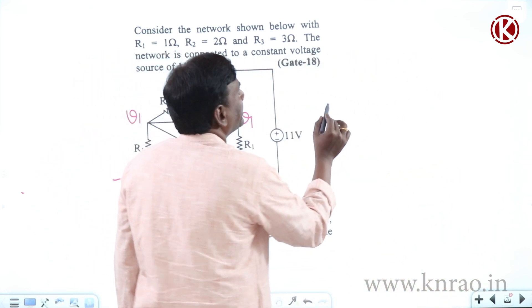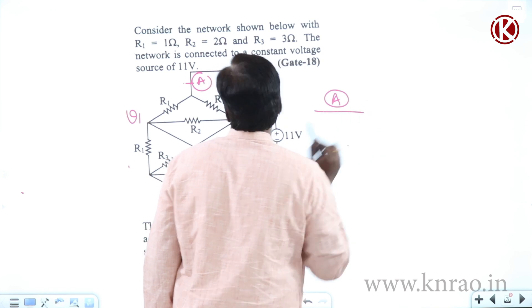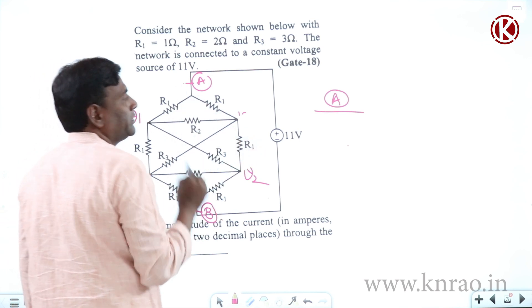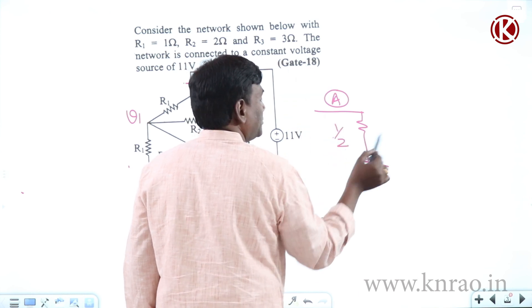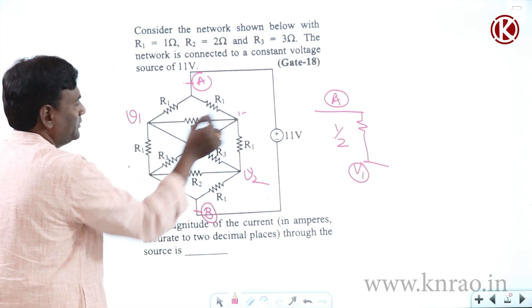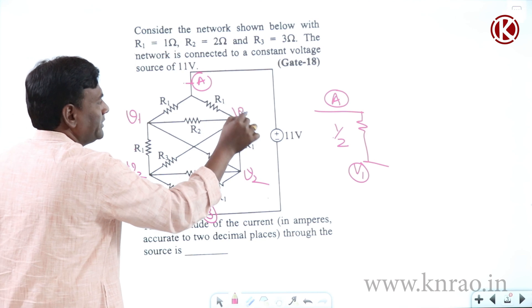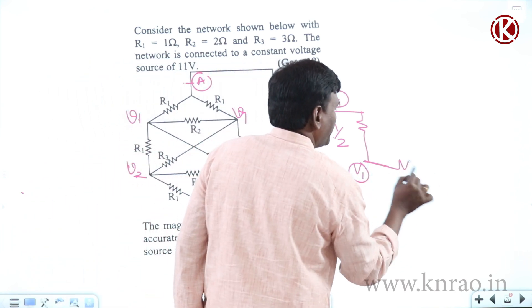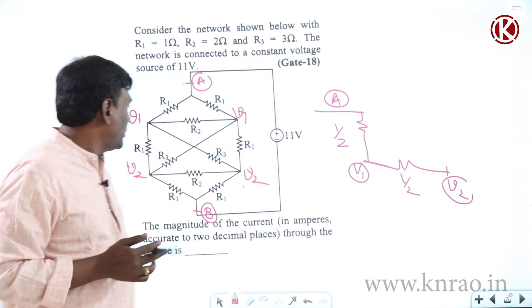So let us start writing. This is A, for example. From A to V1, R1 parallel. So A to V1 equivalently R1 by 2. R1 is 1 ohm, so 1 by 2, this is going to be V1. Now V1 to V2, this is V1, this is V2. So V1 to V2, R1 is there. If this is V1, this is also V1 only. So V1 to V2, R1 is there, V1 to V2 R1 is there. V1 to V2, R1 by 2, so this is going to be 1 by 2, this is going to be V2.